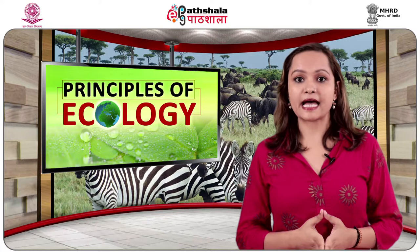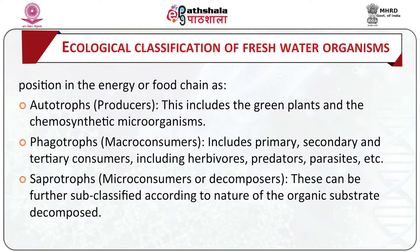Freshwater organisms may be classified on the basis of their position in the energy or food chain. Autotrophs or producers include green plants and chemosynthetic microorganisms. Phagotrophs or macro-consumers include primary, secondary and tertiary consumers such as herbivores, predators and parasites. Saprotrophs or micro-consumers (decomposers) can be further subclassified according to the nature of the organic substrate decomposed.